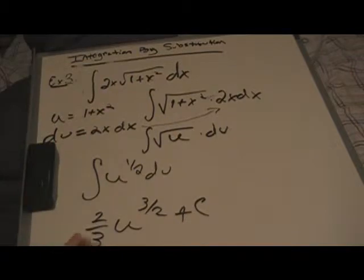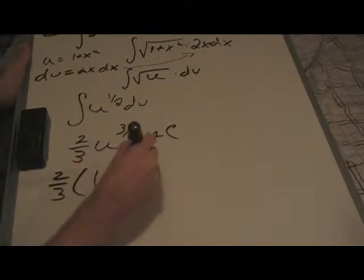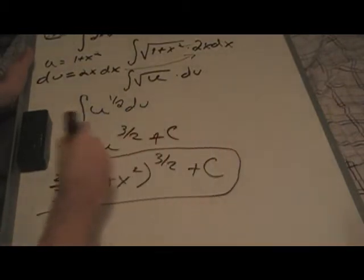And, substituting your u. 2 thirds. 2 thirds 1 plus x squared to the 3 halves plus c. And good job. You are completed with this third easy problem.